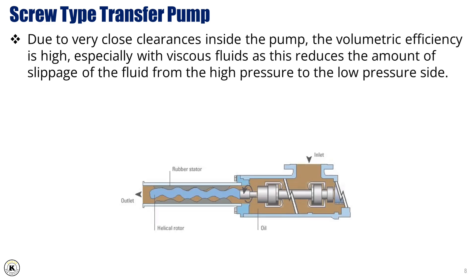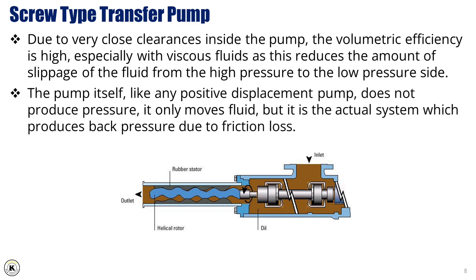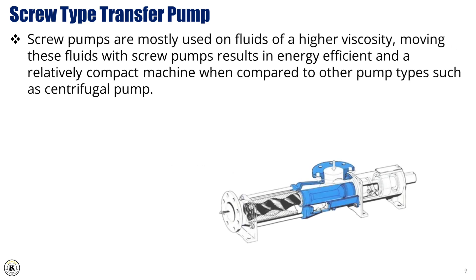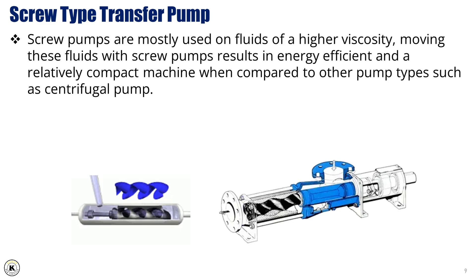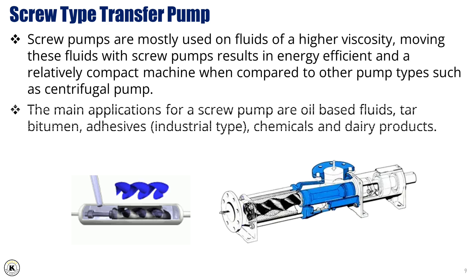Due to very close clearances inside the pump, the volumetric efficiency is high, especially with viscous fluids, as this reduces slippage from the high pressure to the low pressure side. The pump itself does not produce pressure — it only moves fluid — but the actual system produces back pressure due to friction loss. Screw pumps are mostly used on fluids of higher viscosity, resulting in energy-efficient and relatively compact machines compared to centrifugal pumps. The main applications for a screw pump are oil-based fluids, tar bitumen, adhesives, industrial chemicals, and dairy products.